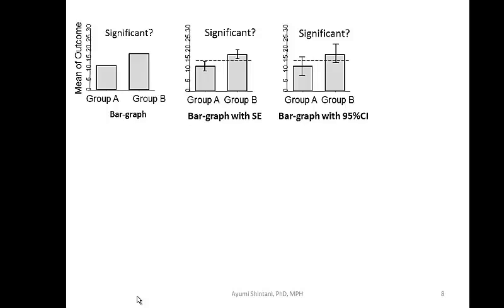Be careful though: overlapping confidence intervals can still show a statistically significant difference. So the only statement we can safely make is that non-overlapping confidence intervals indicate statistical difference — marginal overlap can still be significant. Confidence interval is much better than standard error because you can link the graph directly to the p-value. CI is approximately two times the standard error.